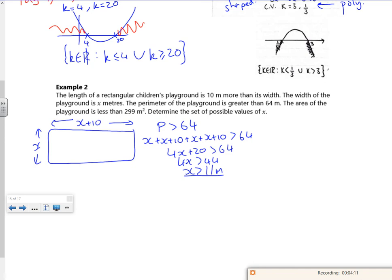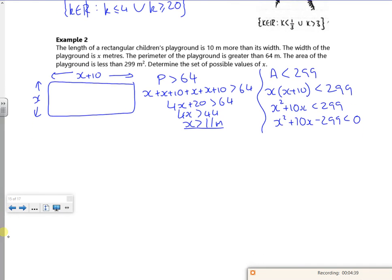So I know the area. But then it says, that's the perimeter. It says the perimeter has to be, sorry, the area has to be less than 299. So x lots of x plus 10 has to be less than 299. So I've done the perimeter, now I'm doing the area. So I've got x squared plus 10x is less than 299. x squared plus 10x minus 299 is less than 0. I've got another quadratic inequality here.